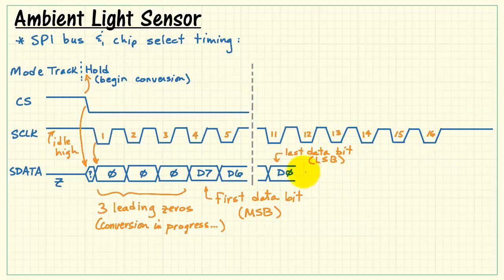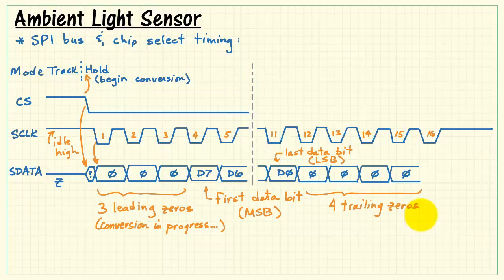And we have a number of serial clock pulses remaining. The converter will clock out four trailing zeros. Now here we see that shortly after the eight data bits have been clocked out, the converter switches back to track mode.